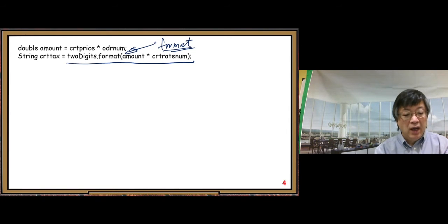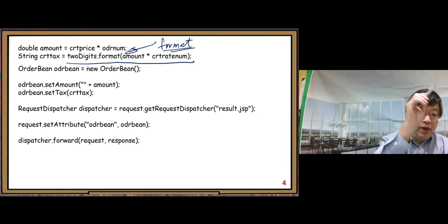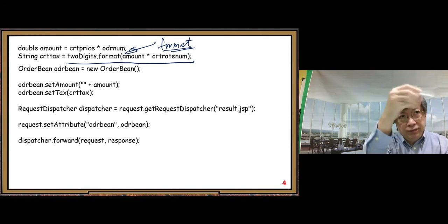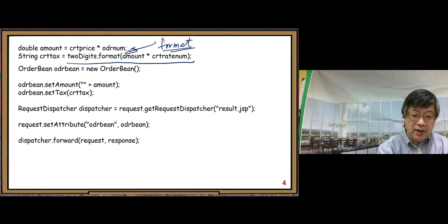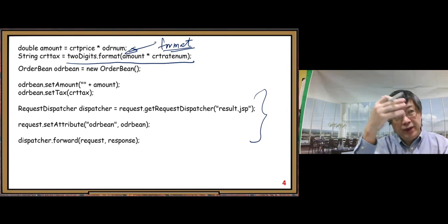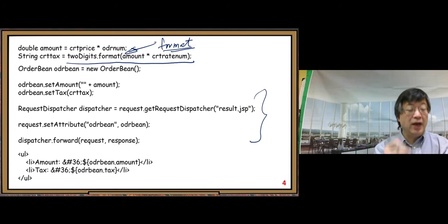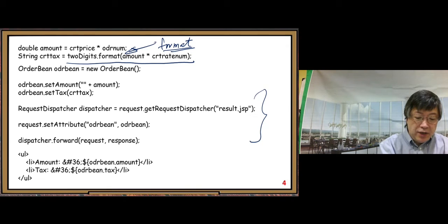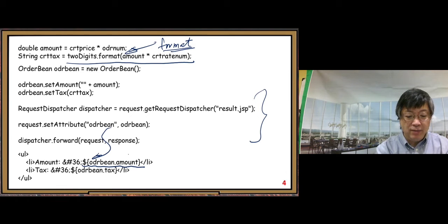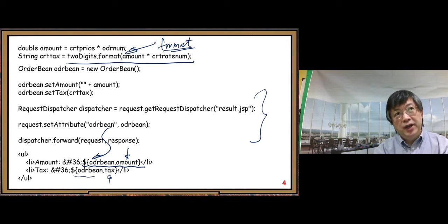After that we put the result in the order bean Java bean, which is sent to result.jsp. The display in result.jsp is pretty standard. The main part shows 'amount:' with the first EL expression — dollar-curly-braces orderBean — with the amount property, and second the tax property.